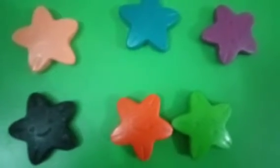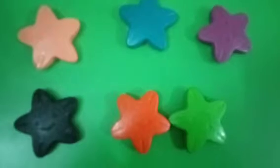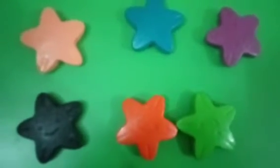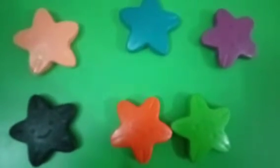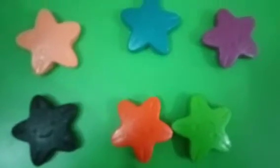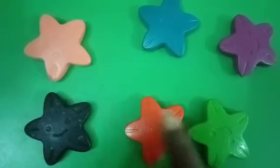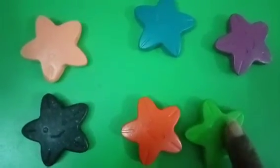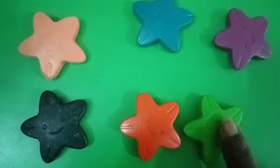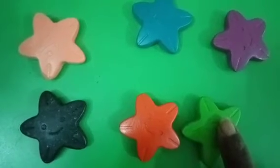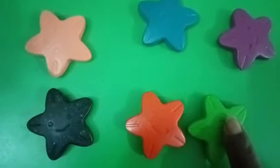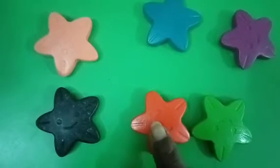Now children, I will show you an example of subtraction. Here I have 6 stars. How many? Count children, 1, 2, 3, 4, 5, 6. Now out of 6 stars, I am going to take away 3 stars. Count 1, 2, 3.